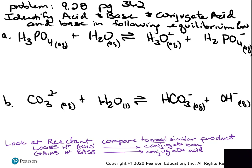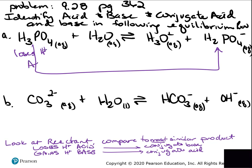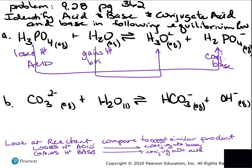If I look at H₃PO₄, what is most like H₃PO₄? H₂PO₄⁻ — they're the most similar-looking reactant and product. Ask yourself: does H₃PO₄ gain or lose a hydrogen ion? It loses, so that means it is an acid. That means H₂PO₄⁻ is the conjugate base — on the product side it's always called 'conjugate' to describe that it acts as a base in the reverse reaction. Then H₂O — the most similar on the product side is H₃O⁺ — it gains a hydrogen ion, so it is a base, and H₃O⁺ is the conjugate acid.